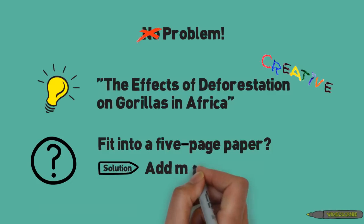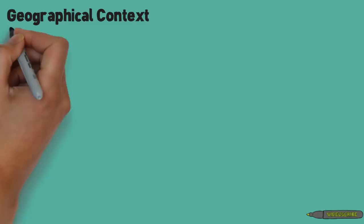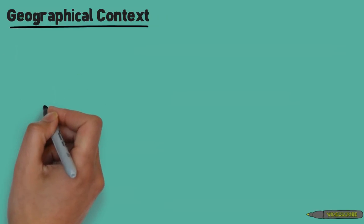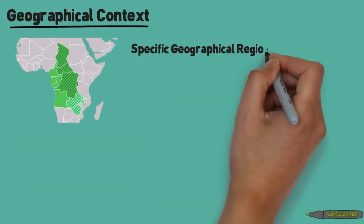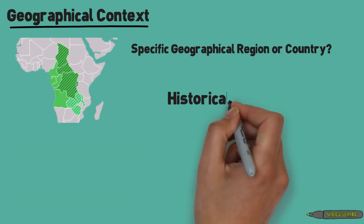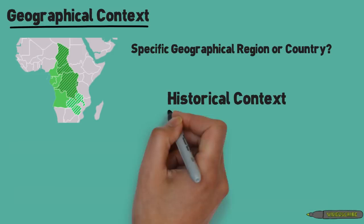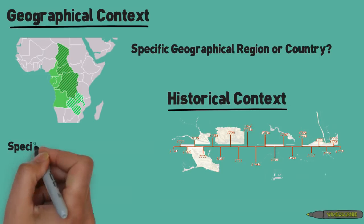The key is to add more context. For example, you could add some geographical context to your paper. Is there a geographic region or a country in which gorillas are specifically affected by deforestation? Perhaps you want to focus more on a historical context. Is there a certain time aspect you want to write about? Perhaps the time when deforestation really started to affect gorillas.